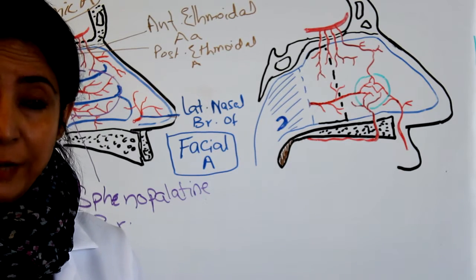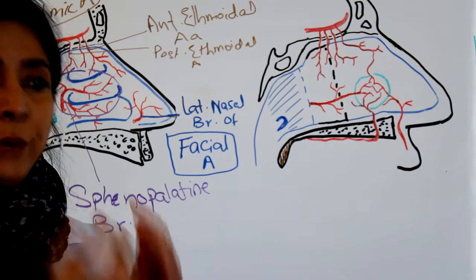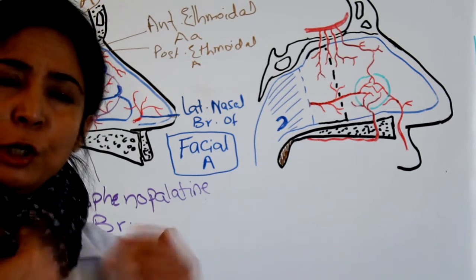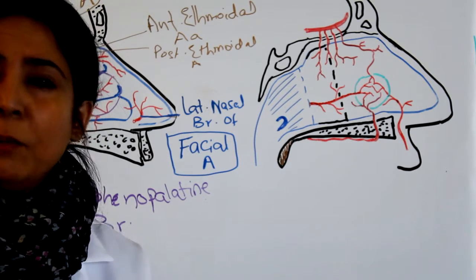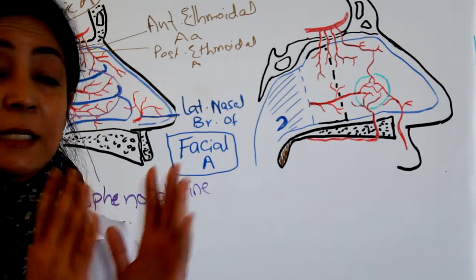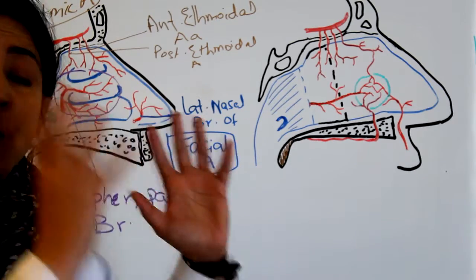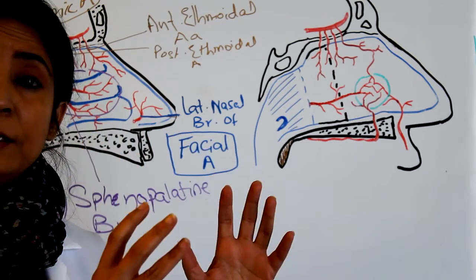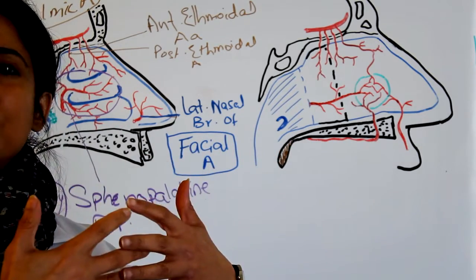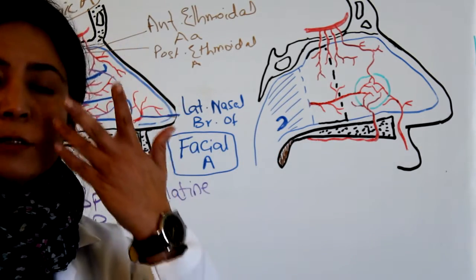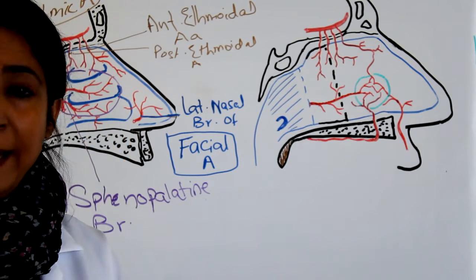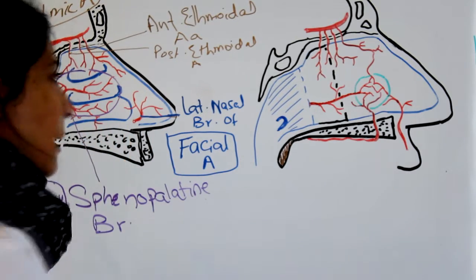Both the external carotid and internal carotid systems anastomose extensively in the walls of the nose as well as on the septum. This is an important point to note.